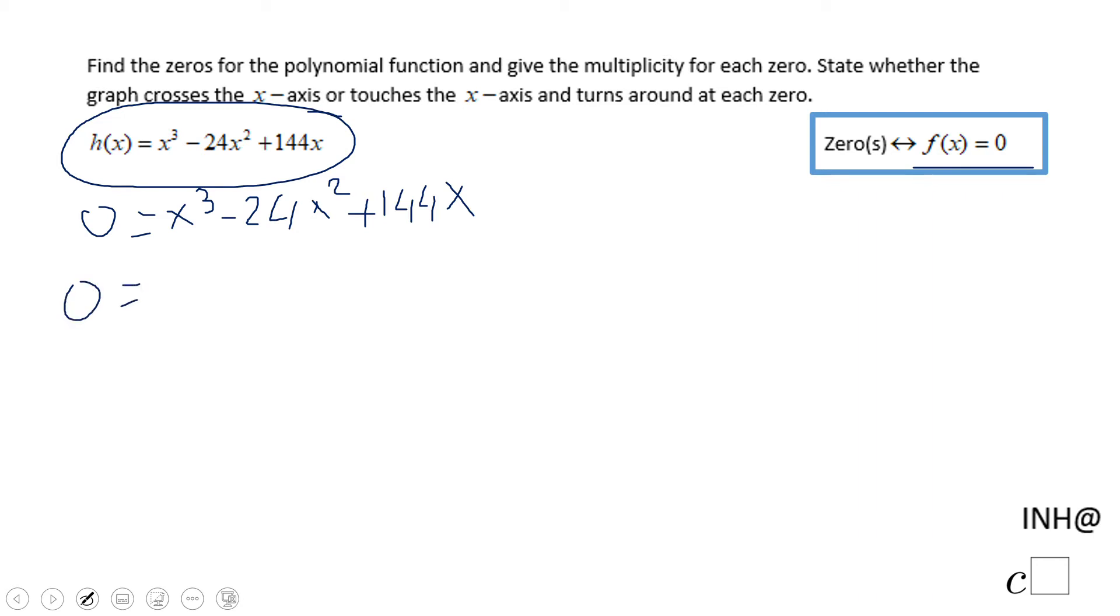First, I'm going to factor out an x because that is the GCF for these three terms. Then we have x(x² - 24x + 144).